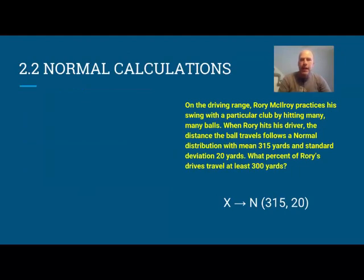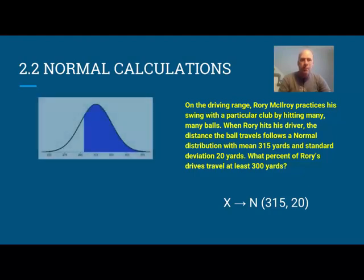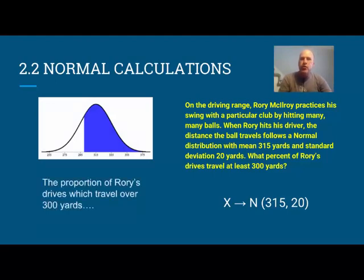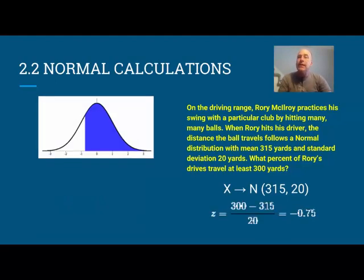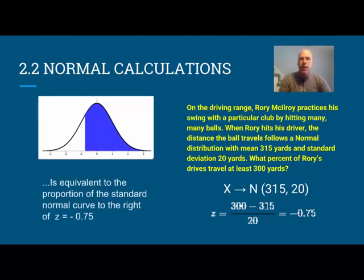So let's fit this into the golf drive problem. Again, I want to find the probability that Rory's drives travel at least 300 yards, so I'm going to make a sketch here and I see a shaded area, but I don't know the area there. So the proportion of Rory's drives which travel over 300 yards is the same as if we find the z-score: the proportion of his drives to the right of a z-score of negative 0.75. Those two ideas—having a drive above 300 yards and the z-score above negative 0.75—have equivalent answers. They have the same shaded area.